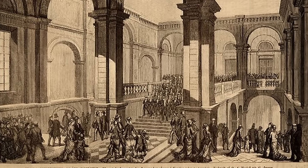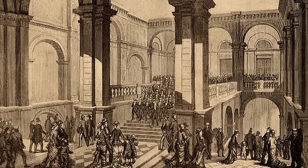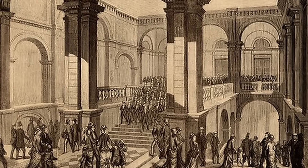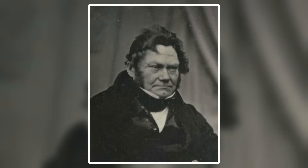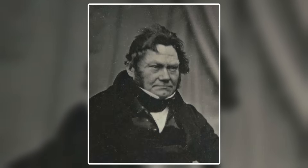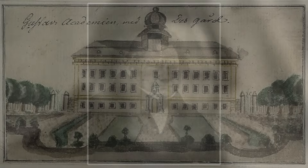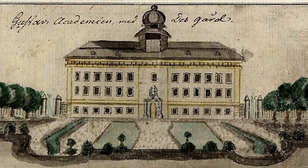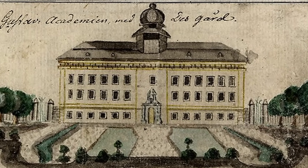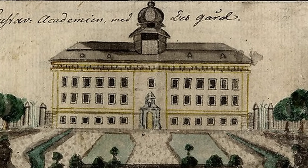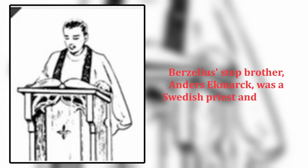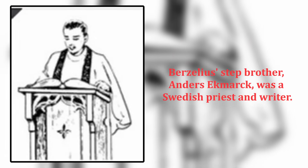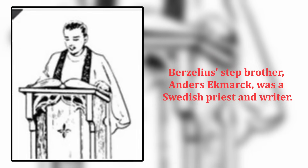In 1796, he entered Uppsala University with hopes of studying medicine, but he had to withdraw from the school upon losing his scholarship. He then worked as a pharmacist to save enough money to eventually return to school and upon doing so, he received his doctorate in 1802 with a thesis on the influence of electricity on disease. He was introduced to chemistry by his stepbrother while at Uppsala, and the two shared a textbook and did experiments together while at the university.